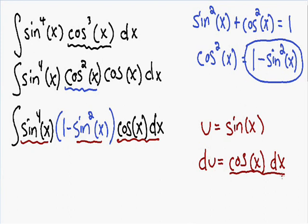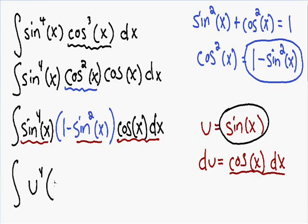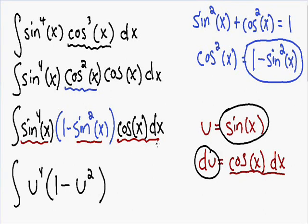Now it's fairly easy to plug everything in terms of u. Since u equals sine of x, instead of sine to the 4th we have u to the 4th. Instead of 1 minus sine squared, we have 1 minus u squared. And our cosine of x dx equals du, so instead of cosine of x dx we just have du.